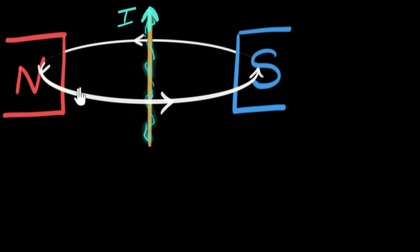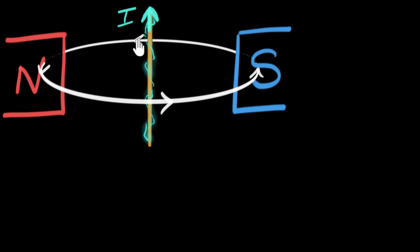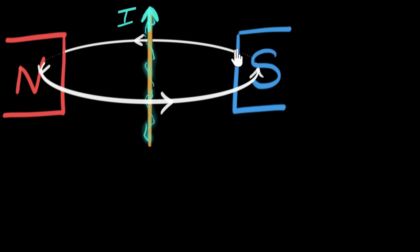Just to recall what we mean by magnetic field direction: if the field points to the right, it means that a tiny magnet placed there would have its north pole experience a force to the right. If I keep a tiny magnet behind the wire, its north pole would experience a force to the left. So the field direction tells us which way the north pole of any magnet placed there would be pushed.